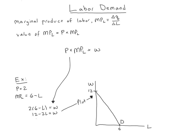We have 2L equals 12 minus W. Then we can divide everything by 2, cancel the 2, and we get L equals 6 minus W over 2. And that is our labor demand function.